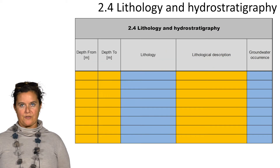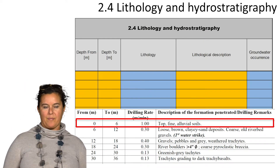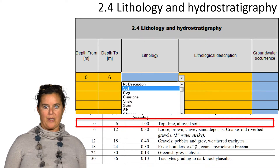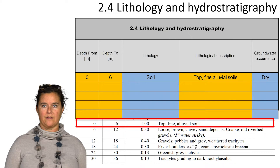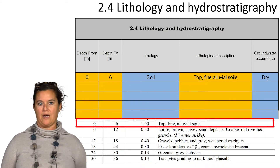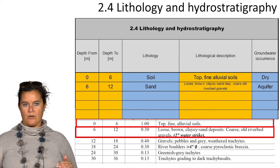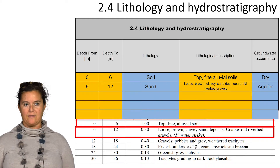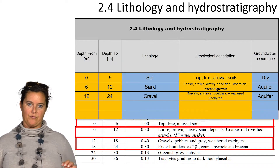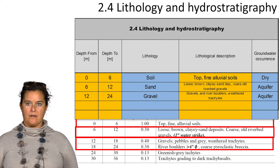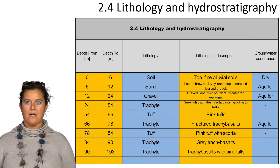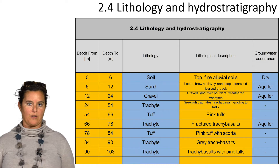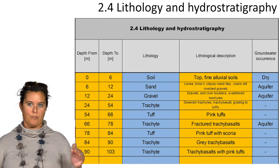For the lithology and hydrostratigraphy we will again look into the borehole completion report. We add depths manually in the yellow cells, then in the lithology column we select from the drop-down menu, and in the lithological description we add details of the lithological characteristics. In the groundwater occurrence column we can select from dry, hyphen, and aquifer. We go down through the whole borehole, and where similar lithologies occur we can group them into one single layer. It is very important to define where there is a water strike and to record where the aquifer is. If there is no information about groundwater but there is an aquifer above, just choose hyphen.